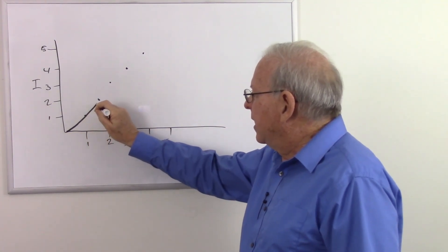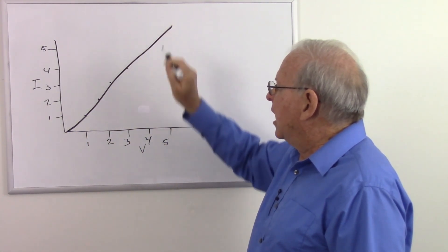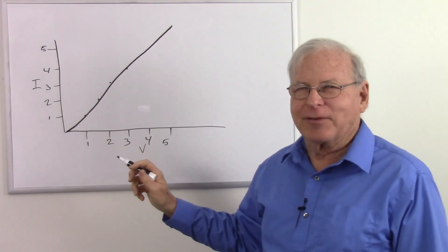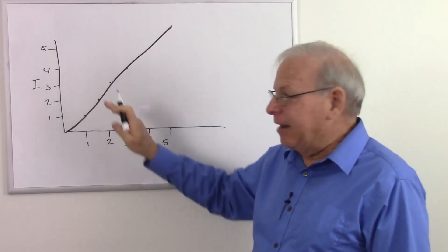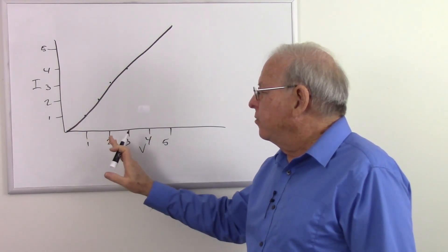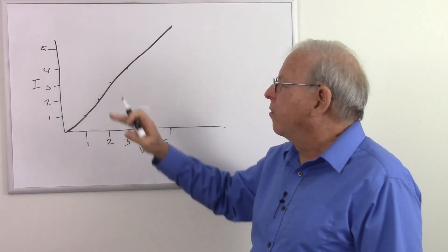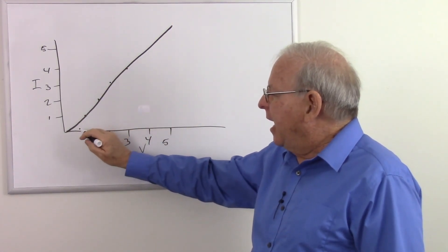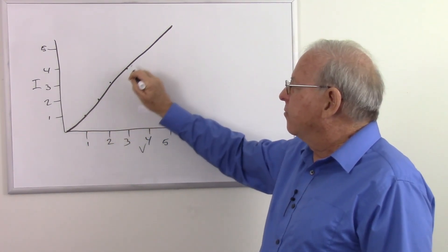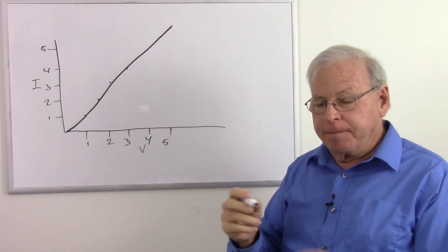What I would get is a straight line. 1 volt, 1 amp. 2 volts, 2 amps. 3 volts, 3 amps. 4 volts, 4 amps. That gives me a straight line on this graph, and that means I have a linear relationship.